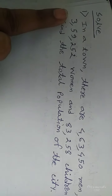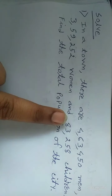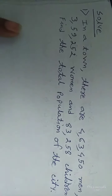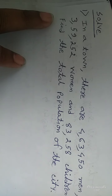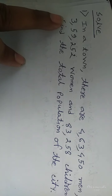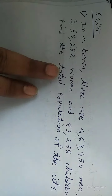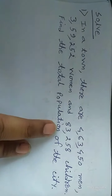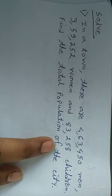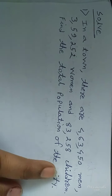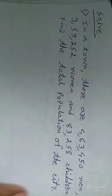First question: In a town there are 4,63,450 men, 3,59,252 women and 83,258 children. Find the total population of the city.